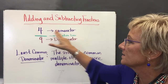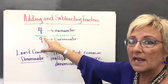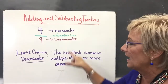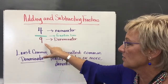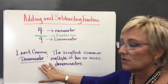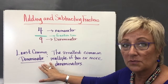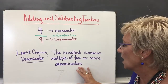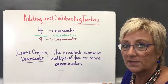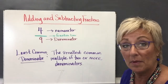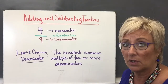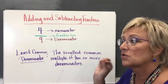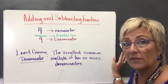Adding and subtracting fractions — you need to know that 4 is going to be your numerator. This bar right here is your fraction bar; it can also mean divided by, and the denominator is going to be 9. Your least common denominator is what you're looking for — the smallest common multiple of the two or more denominators. When reducing, we look for the GCF. When finding common denominators, we look for the LCM.